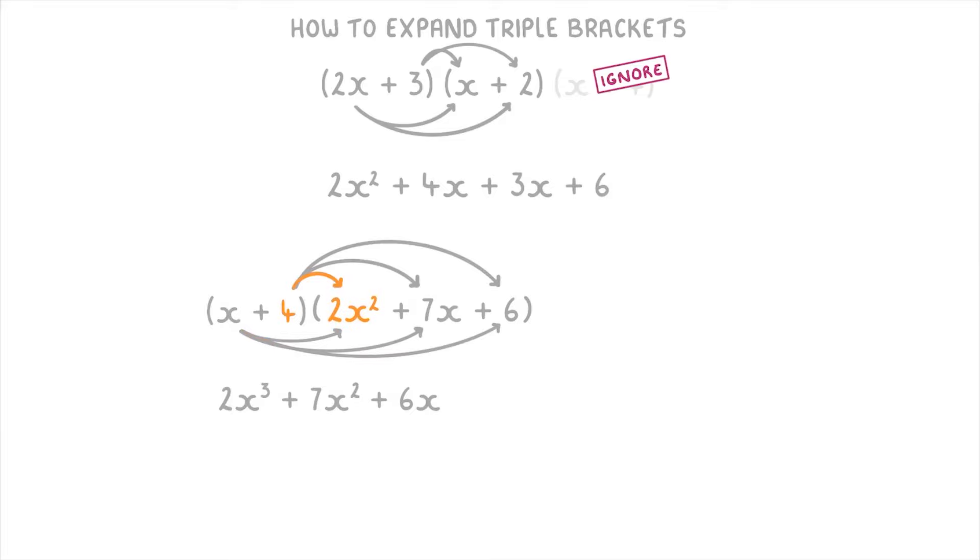Then for the 4 we do 4 times 2x squared which is 8x squared, 4 times 7x which is 28x, and 4 times 6 which is 24. The last thing we need to do is simplify all of this by combining the like terms. So we can combine these two x squared terms to get 15x squared and these two x terms to get 34x, so that we have 2x cubed plus 15x squared plus 34x plus 24, and that will be our final answer.